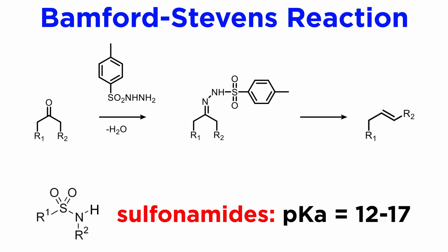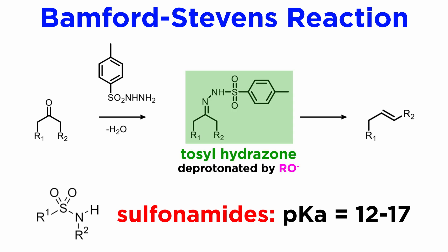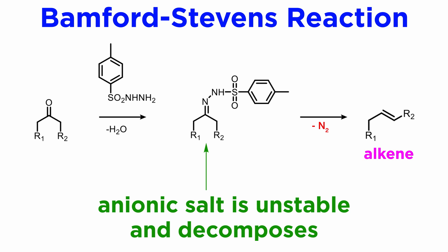We have to remember that sulfonamides are quite acidic, their pKa being in the range of 12 to 17, and tosyl hydrazones, being related to sulfonamides, are also acidic and can be deprotonated by alkoxide bases. Bamford and Stevens discovered that the anionic salts of tosyl hydrazones are thermally unstable and decompose to alkenes, nitrogen gas, and sulfonate salts.